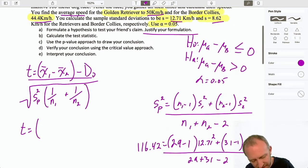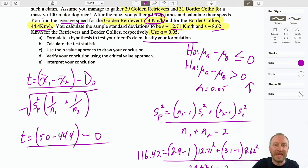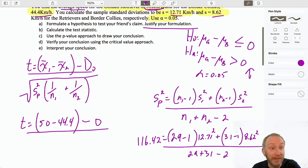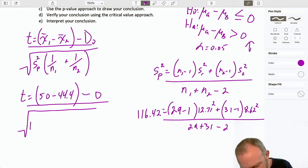So, our sample means here, I had the Golden Retriever was 50 minus 44.4. That hypothesized difference, again, was zero. We did some examples in the first part of Module 10, where we had something different for that hypothesized value. If you need to review that, go back and look at those z-tests. It doesn't change much here. And, here now I have my pooled estimate, 116.42 over 1/29 and 1/31.